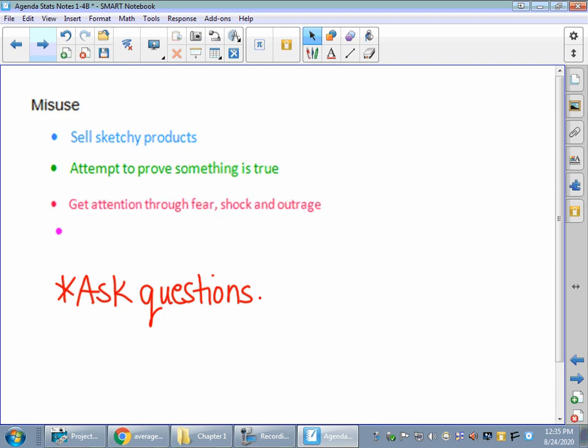Or get attention through fear, shock, outrage. That's that whole spinning thing. Attention for a person, attention for a situation. Statistical studies do not really prove anything. Statistical studies do not really prove anything. They will either support or not support a hypothesis or a premise. That's all they do.